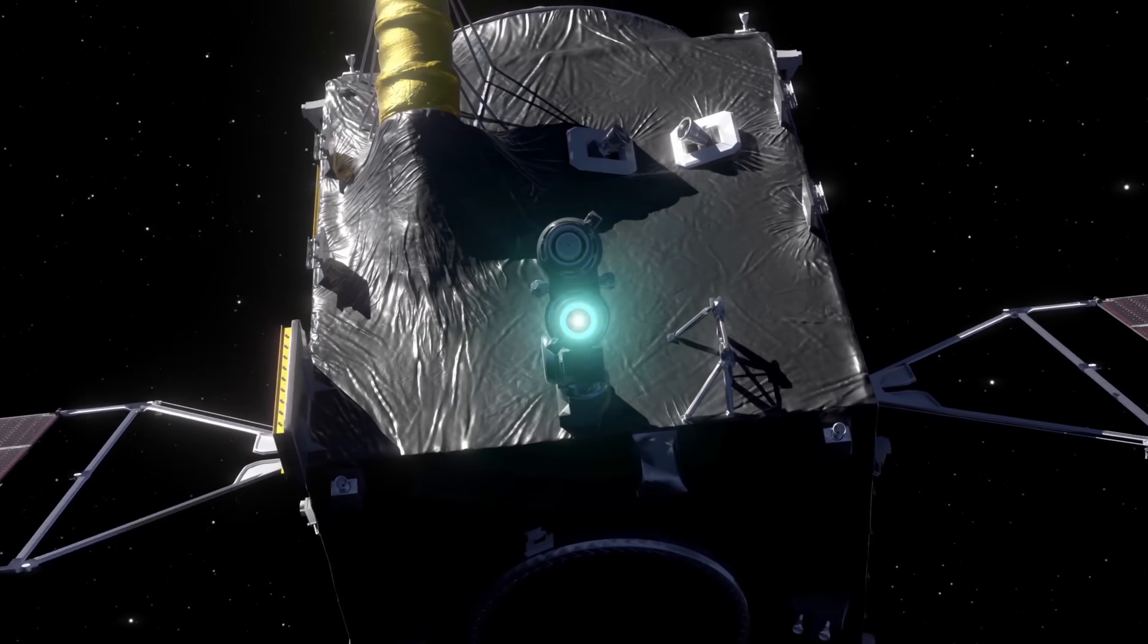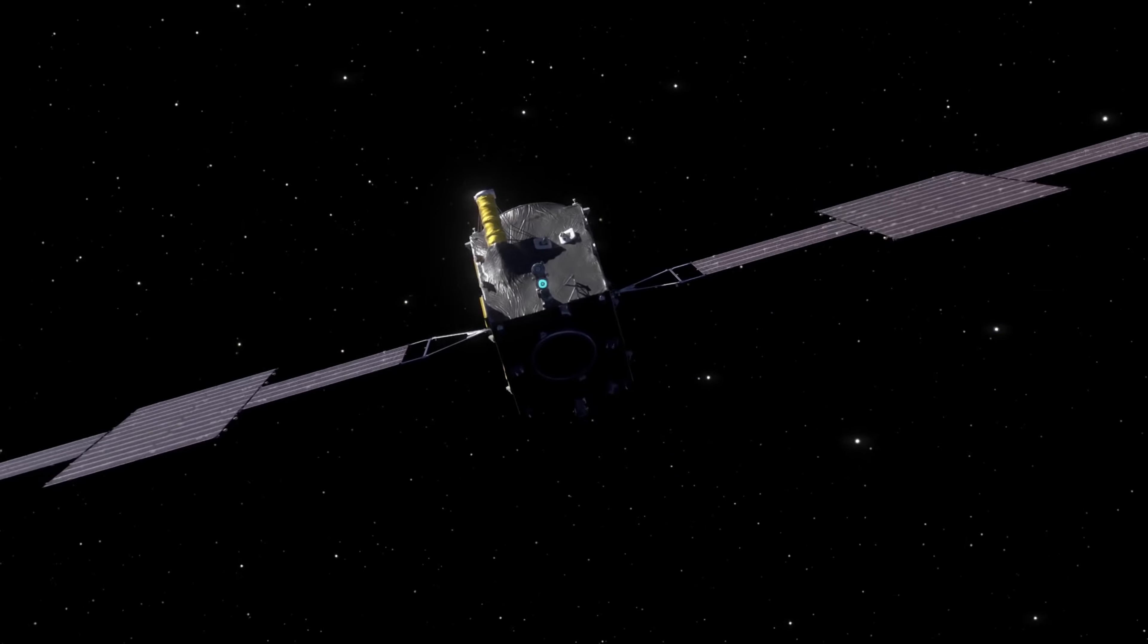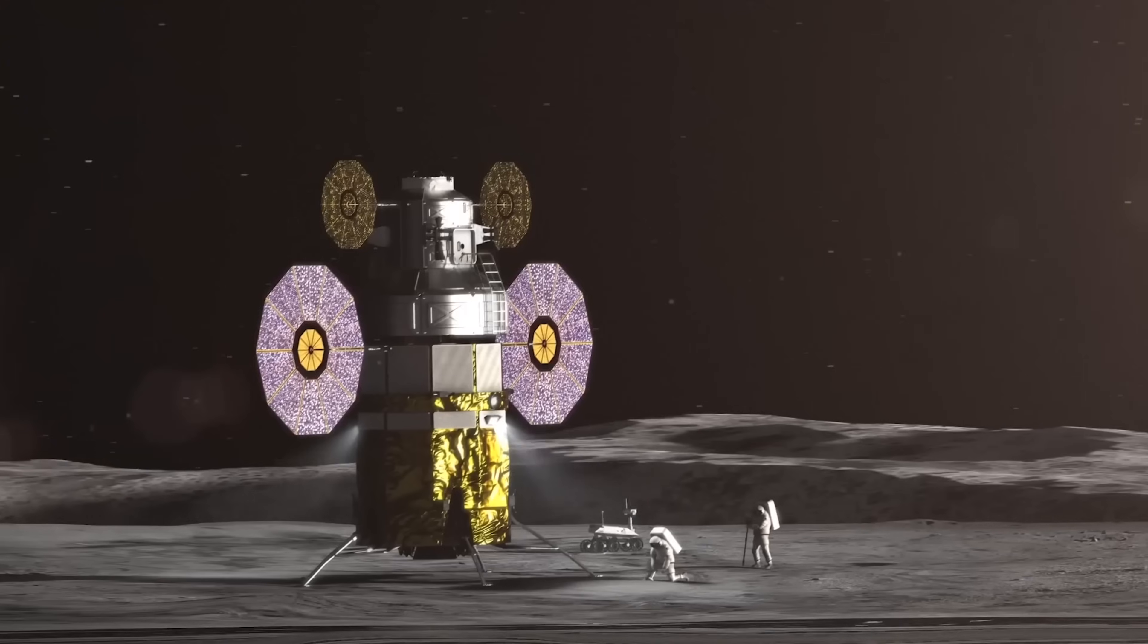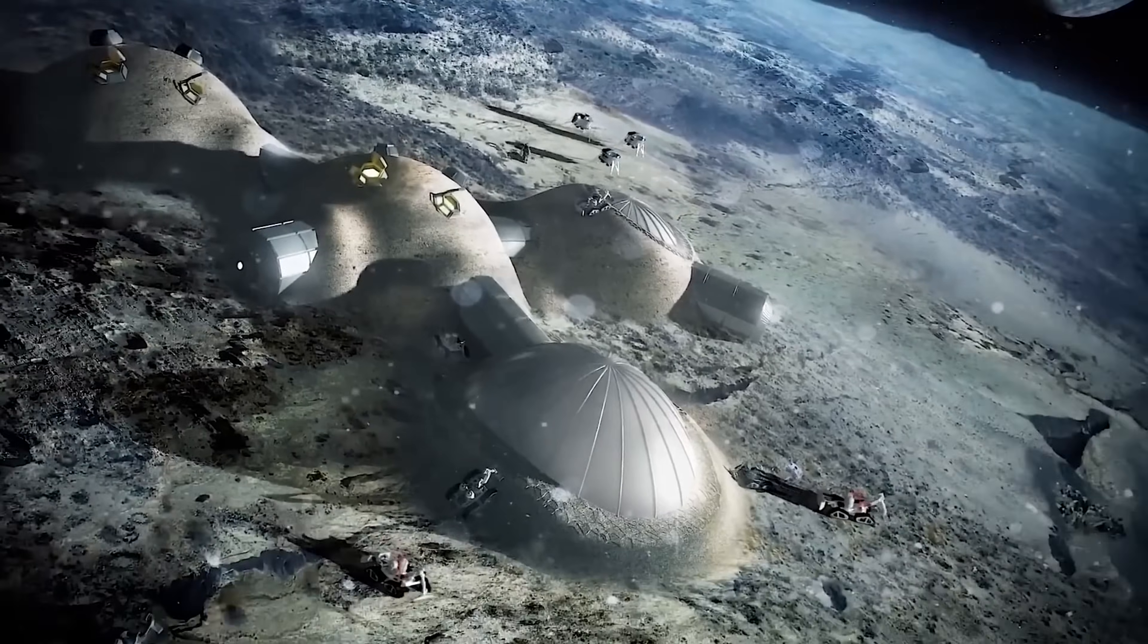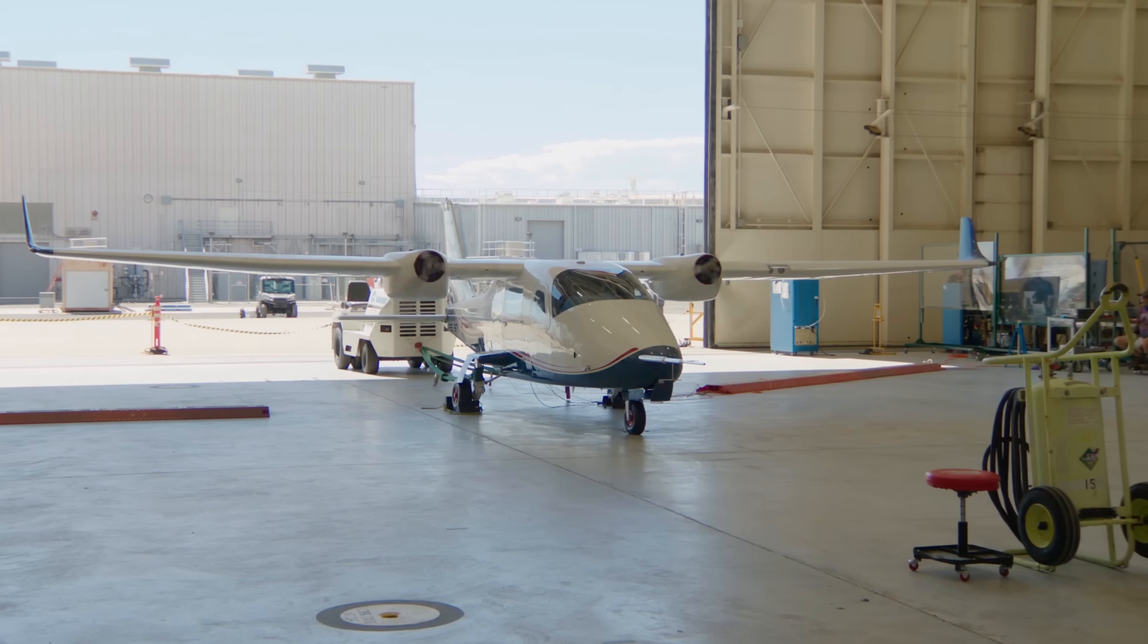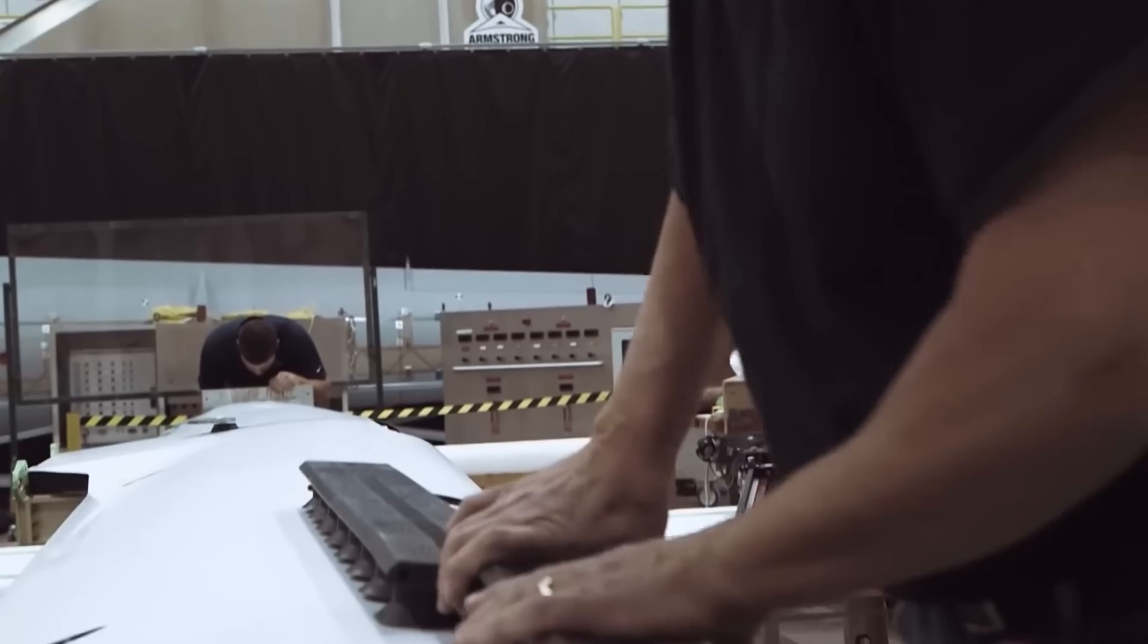Some media outlets have also highlighted the potential applications of the battery for various NASA missions, such as electric aircraft, air taxis, drones, spacesuits, landers, rovers, and habitats. The public reaction has been mostly positive and enthusiastic, as many people have expressed their interest and excitement for the battery and its implications for the future of flight. Some people have also praised NASA for its innovation and leadership in battery research and development.